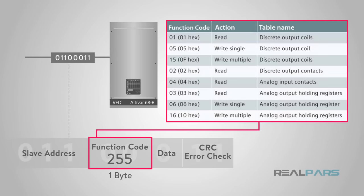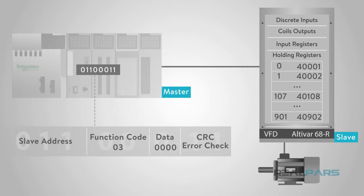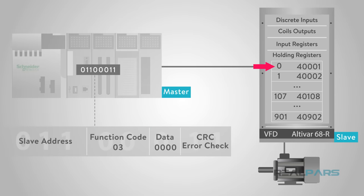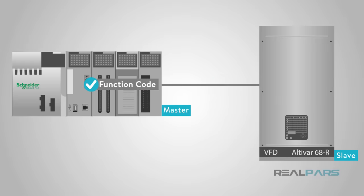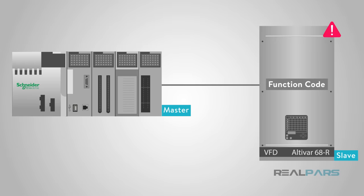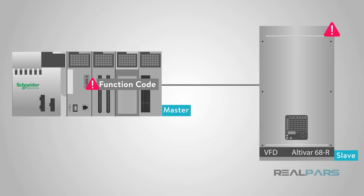This table highlights a subset of standard Modbus functions. The master request data field provides the slave with any additional information required to complete the actions specified by the function code, typically including the slave map register address, the number of registers to provide in the request, and any write data from the master. The slave's normal response echoes the original function code, but the slave's error response returns a code equivalent to the original function code with the most significant bit set to logic 1.